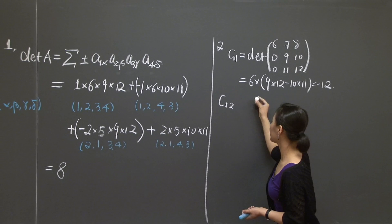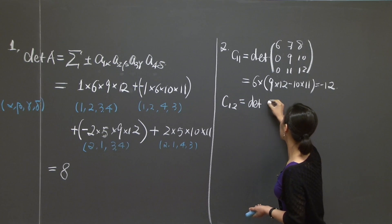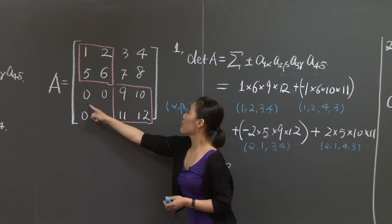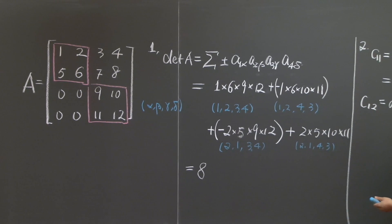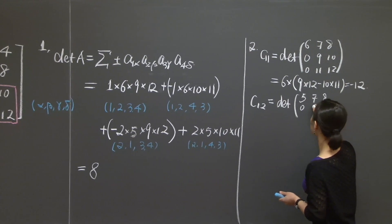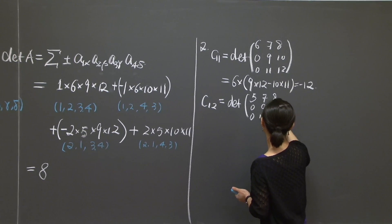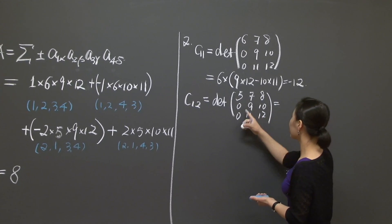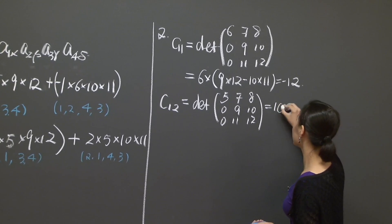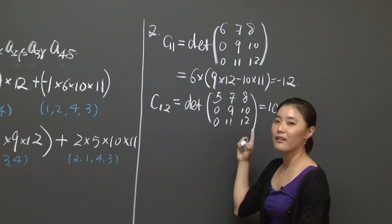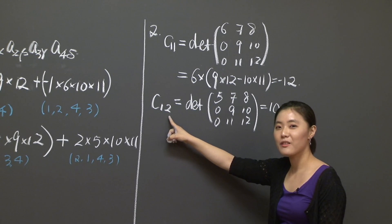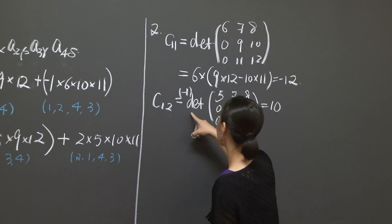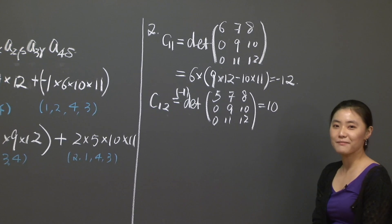That's not too bad. Let's look at the second one, C12. C12 is the determinant of this 3 by 3 matrix. So I have to delete the first row and the second column, and I read what is left over. That's 5, 7, 8, 0, 9, 10, 0, 11, 12. Same thing. The first column has only one non-zero entry. You expand it along the first column, use cofactors. Because we're looking at 1-2 entry, for the cofactor I have to put an extra negative sign here. So this is actually negative 1 times the determinant of this 3 by 3 matrix, and the result will be 10.